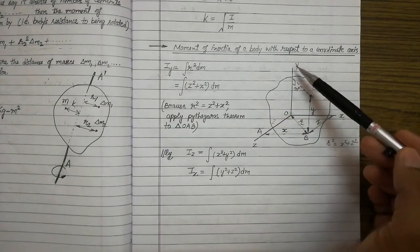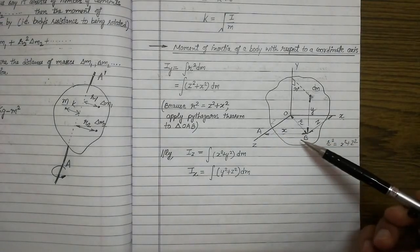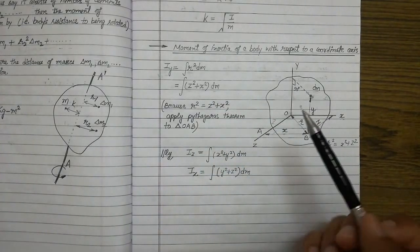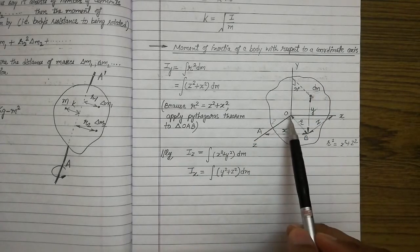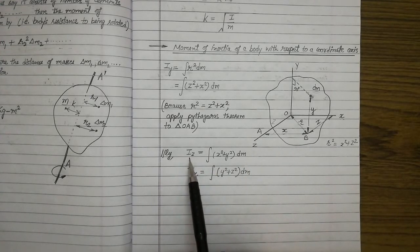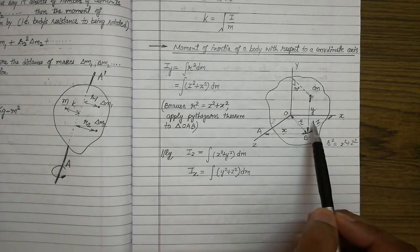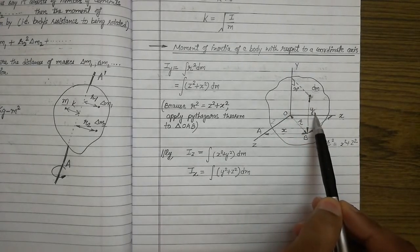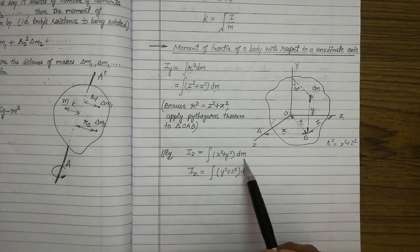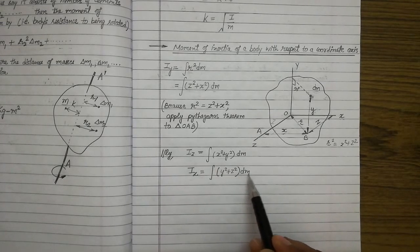So to find the moment of inertia of a body along the y-axis, find the distances of the small element from the other two axes, square those distances, add them, and multiply by dm. Similarly, for the moment of inertia along the z-axis, the distances from the x-axis and y-axis are x and y respectively. So Iz = ∫(x² + y²) dm.